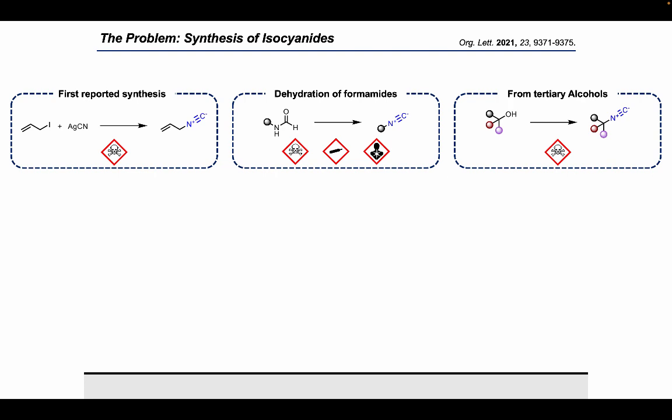Now because of this, the most common method for isocyanide synthesis is actually the dehydration of formamides in the presence of phosgene and an organic base. However, this too is a high-risk, hazardous, and expensive method at both small and large scale, and it's actually incompatible with most common functional groups, in particular amides.